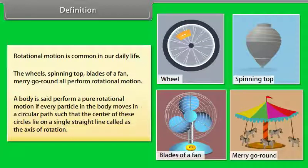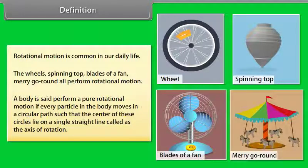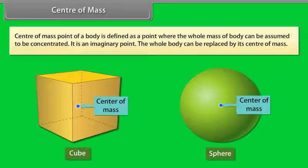Rotational motion is common in our daily life. The wheels, spinning top, blades of a fan, and merry-go-round all perform rotational motion. A body is said to perform pure rotational motion if every particle in the body moves in a circular path, such that the centers of these circles lie on a single straight line called the axis of rotation.